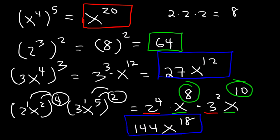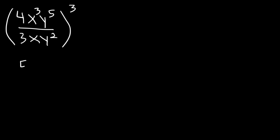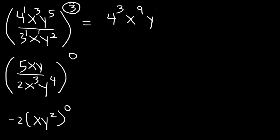And 144x to the 18th is the final answer. Now let's try: 4x cubed y to the fifth divided by 3xy squared, all raised to the third power. Let's distribute the exponents — multiply everything by 3. So 1 times 3 is 3, 3 times 3 is 9, 5 times 3 is 15 for the numerator; and 1 times 3 is 3, 1 times 3 is 3, 2 times 3 is 6 for the denominator.